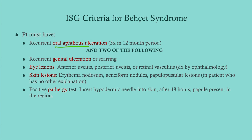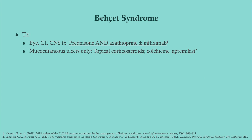The ISG criteria for Behçet's require oral aphthous ulcers — without those, you cannot diagnose Behçet's — plus two of the following: genital ulceration, eye lesions, skin lesions, or a positive pathergy test. For treatment: if there are ocular, GI, or CNS features, use prednisone plus a cytotoxic like azathioprine, possibly adding infliximab. If only mucocutaneous ulcers are present, topical corticosteroids suffice, with colchicine or apremilast as add-on options.